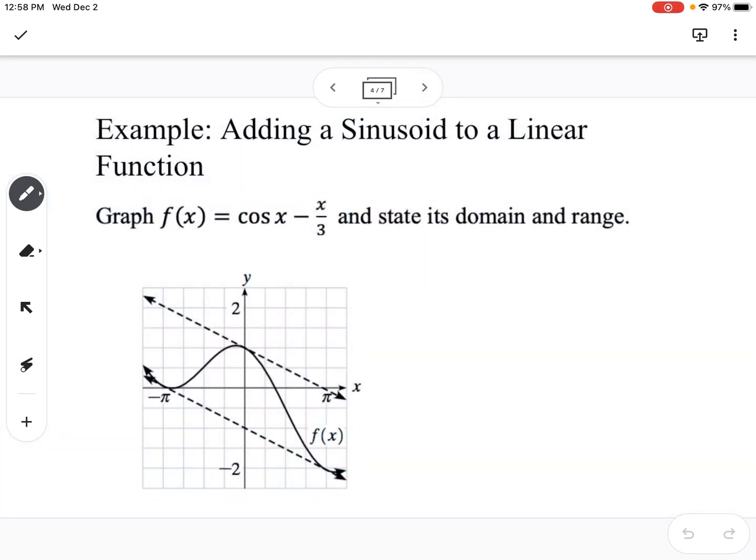Our next example, adding a sinusoid to a linear function. So if we have f of x equals cosine of x minus x over 3, and then we're stating the domain and range. If you look here, we can see that this is a different type of graph. We're not typically used to looking at stuff like this.